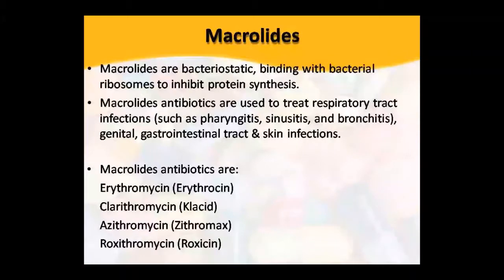Next drug is macrolides. These are bacteriostatic — they stop the growth of bacteria. They bind to the bacterial ribosome and inhibit protein synthesis inside the bacteria. Macrolide antibiotics are given for respiratory tract infections, genital tract infections, gastrointestinal tract infections, and skin infections. For respiratory conditions like pharyngitis, sinusitis, and bronchitis they have a very good role. Drugs in the macrolides class include erythromycin, azithromycin, clarithromycin, and roxithromycin.